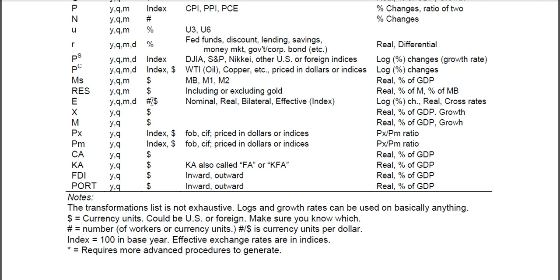The exchange rate is some sort of currency per dollar, but it could also be flipped — dollars per currency. You should always remember what your numerator and denominator are. Dollars per peso, pesos per dollar — it makes a difference. Don't get it backwards.